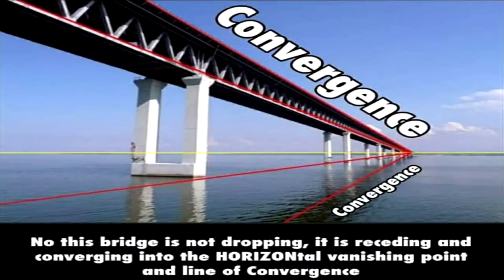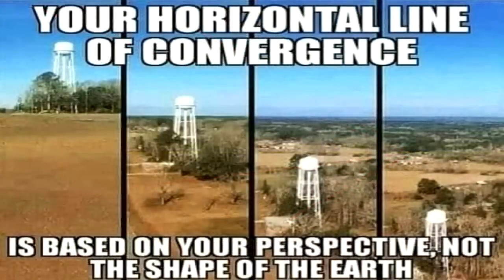This proves that the depression of the pole star can and does take place in relation to a flat surface, simply because we increase our distance from it, the same as from the street lamp.